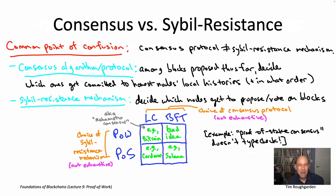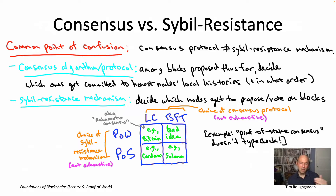To really belabor that point, we drew this two-by-two matrix, with the rows labeled by possible civil resistance mechanisms — proof of work in the top row, proof of stake on the bottom row — and the columns labeled with the choice of the consensus protocol: longest chain in the first column, BFT-type consensus in the spirit of Tendermint in the second column.